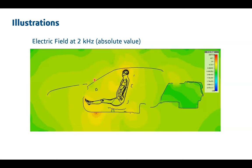For SAR (specific absorption rate) calculations — the amount of electric field intensity the human body can tolerate before showing detrimental effects — you can create a simulation and identify points of higher field intensity. As expected, near the traction current loop you would have higher field intensity, and you also see high intensity exactly where the passenger has their feet. If you are a cable engineer designing automotive vehicles, these are the areas you need to keep in mind — you need to determine if these levels are acceptable, and then rewire your circuits so that minimum SAR levels are met and the passenger is not affected.